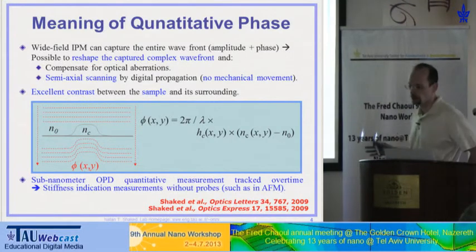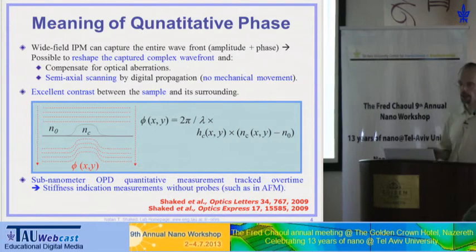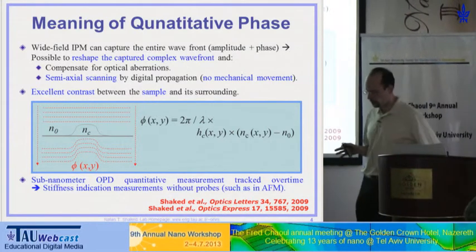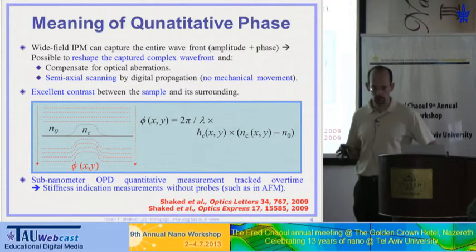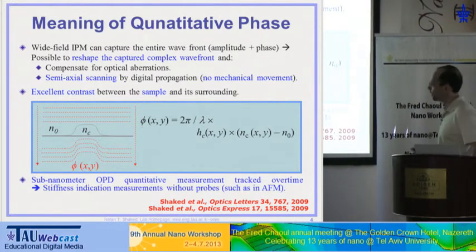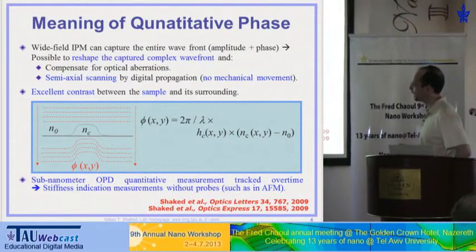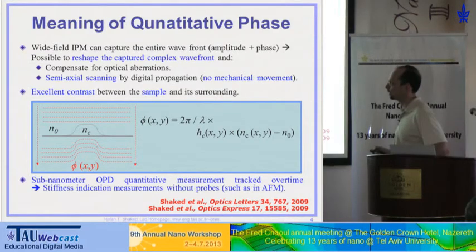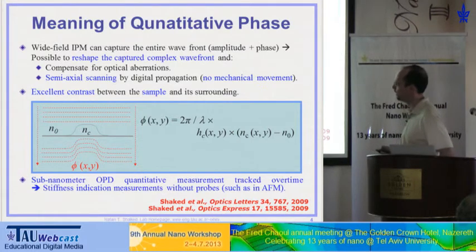The meaning of quantitative phase is, in fact, optical thickness. The accuracy we get is very high — quantitative phase means optical thickness up to 2π over λ, where λ is the illumination wavelength. Let's say I have a sample with a certain refractive index that might be complex, changing in space, dependent on x, y, and z.